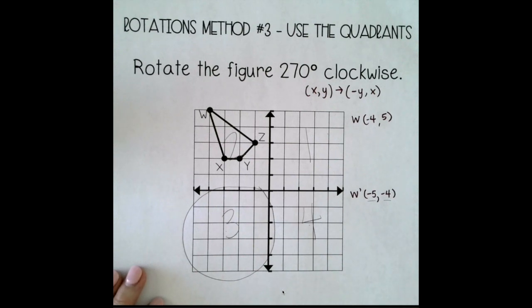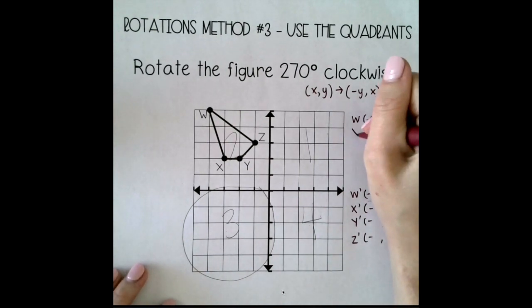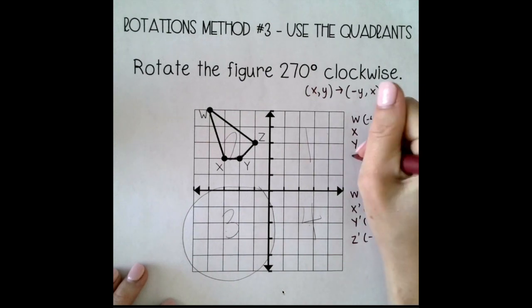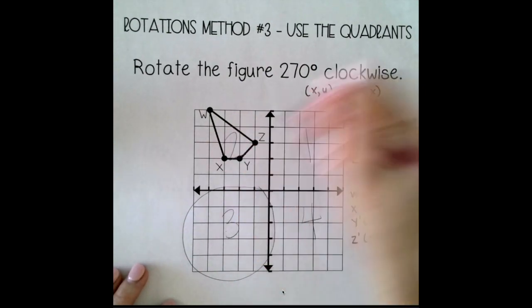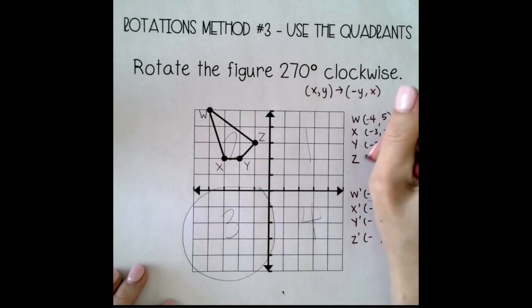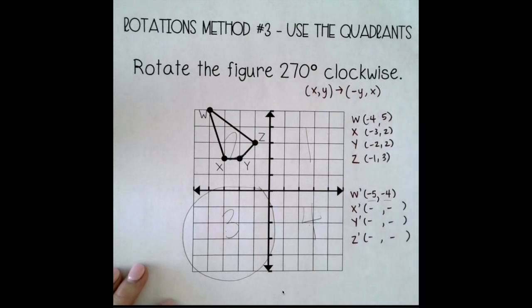So without even knowing any of the other numbers, I know all of my signs already. And the signs are usually the hardest part. Okay, so I'm going to go ahead and finish writing my pre-image coordinates. Negative 3, 2. Negative 2, 2. Negative 1, 3.